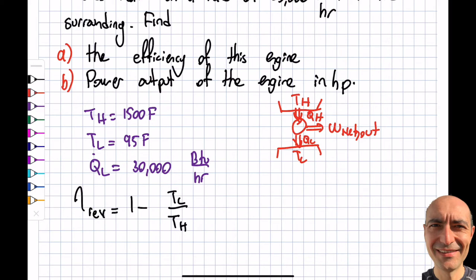For a reversible engine, η_rev = 1 - TL/TH. I cannot use Fahrenheit directly—I need to convert to Rankine. TL in Rankine is 95 + 460, and TH in Rankine is 1500 + 460. Calculating this gives 71.7%.